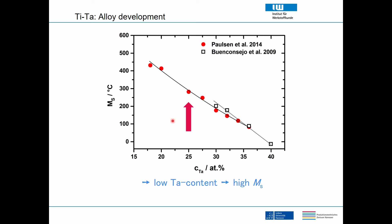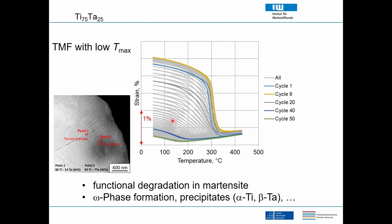The martensite start temperature data showed that earlier Ti-30Ta sat at around 200 degrees C, but decreasing the tantalum content pushed the martensite start temperature up, giving potential for really high-temperature shape memory alloys. We selected Ti-25Ta to avoid the very high temperatures where oxidation problems arise. The first TMF test with a maximum temperature of around 420 degrees C shows the initial cycle giving a nice shape memory behavior with strain slightly above two percent.